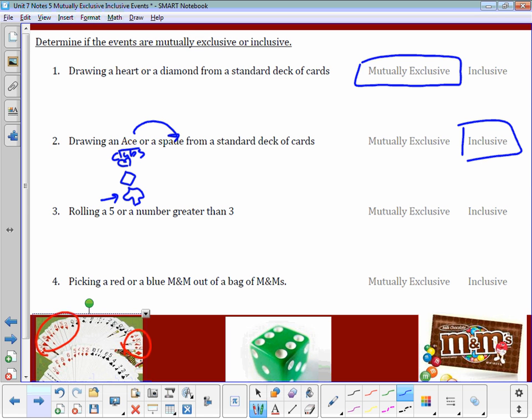Number 3: rolling a 5 or a number greater than 3. Well, rolling a 5 is just the number 5. Numbers greater than 3 would be 4, 5, and 6. Uh-oh, I've got 5 in both. So again, these are inclusive because there are events that overlap. Why don't you pause the video and see if you can answer number 4.